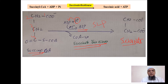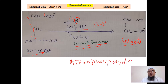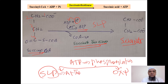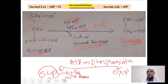ATP is formed by the phosphorylation process, and phosphorylation is of two types: substrate level phosphorylation and oxidative phosphorylation. Substrate level phosphorylation takes place at the site of the reaction, whether in the mitochondria or the cytoplasm. However, oxidative phosphorylation only takes place in the mitochondria.